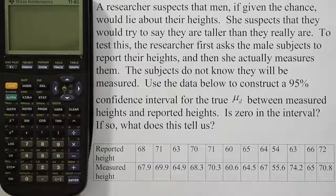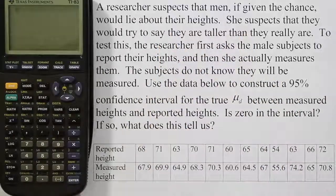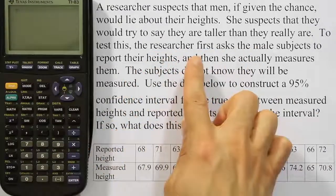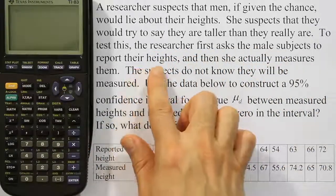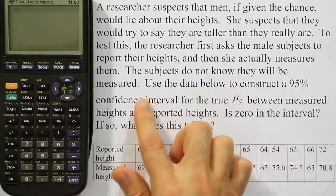Let's look at this problem and see if it fits that mold. It says a researcher suspects that men, if given the chance, would lie about their heights. She suspects that they would try to say they are taller than they really are. To test this, the researcher first asks the male subjects to report their heights and then she actually measures them. The subjects do not know they will be measured.